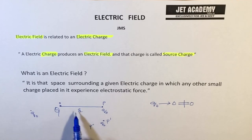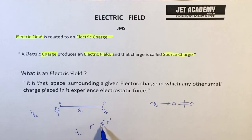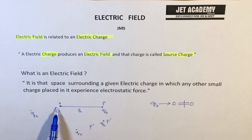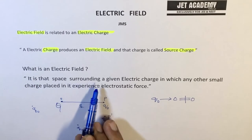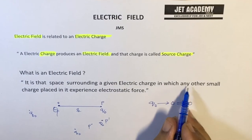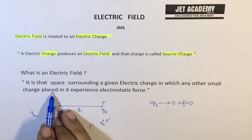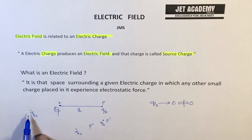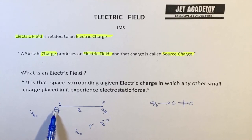If we place Q0 anywhere surrounding Q and Q0 experiences the Coulombic force in the space surrounding Q anywhere, then the space surrounding Q is called electric field, which is produced due to the source charge Q. That is the simplest way we can define an electric field — it is the space surrounding a given electric charge Q in which any other small charge Q0 placed in it experiences an electrostatic force. The space surrounding Q is said to be the electric field due to that respective charge.